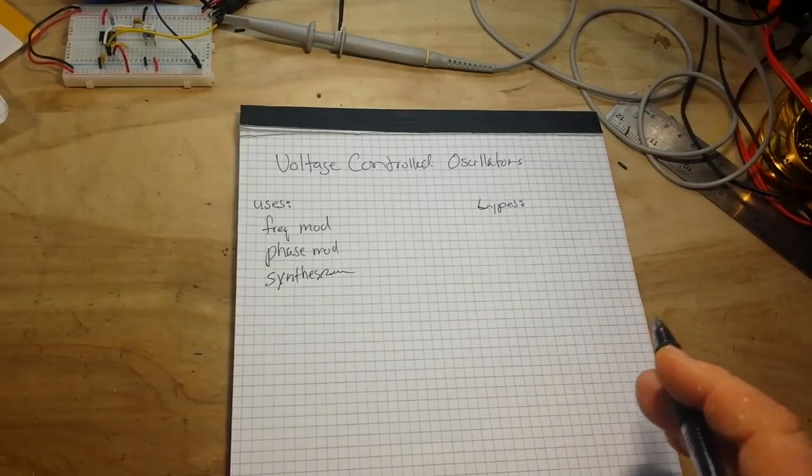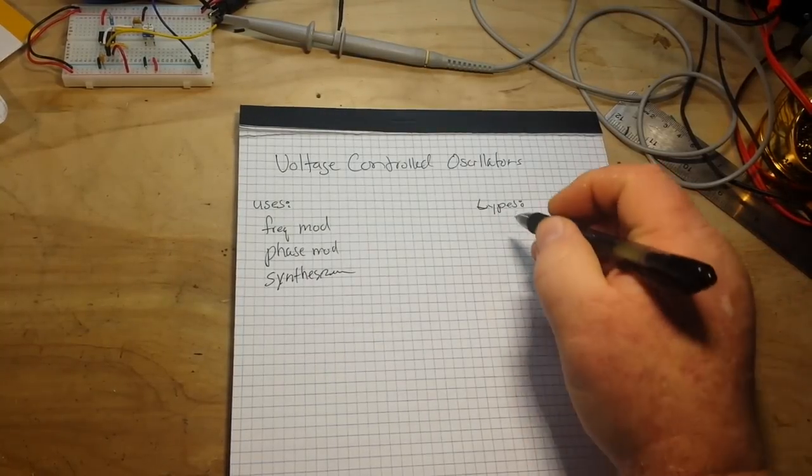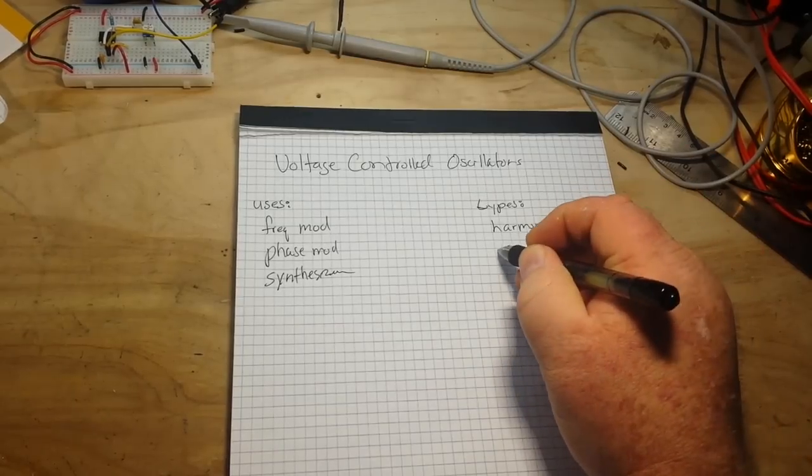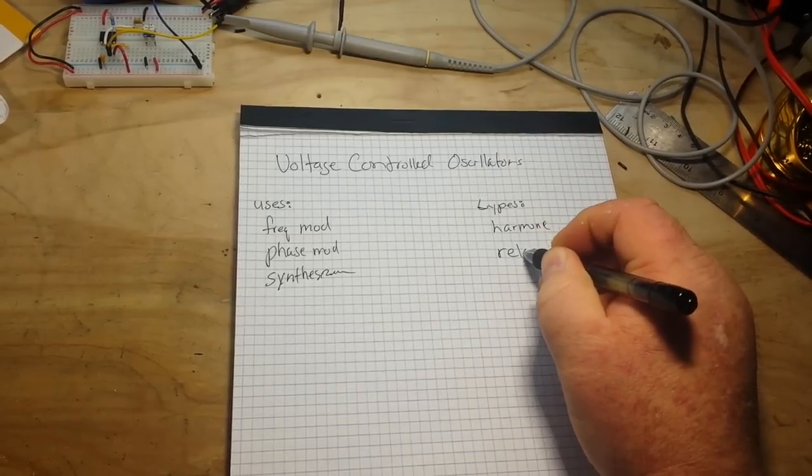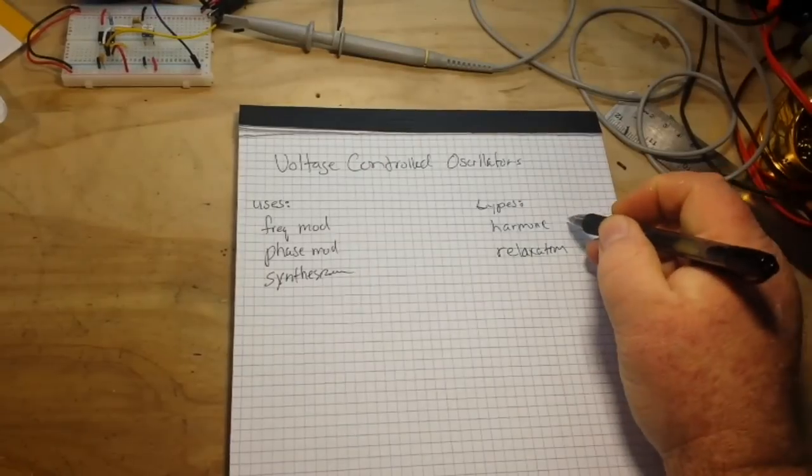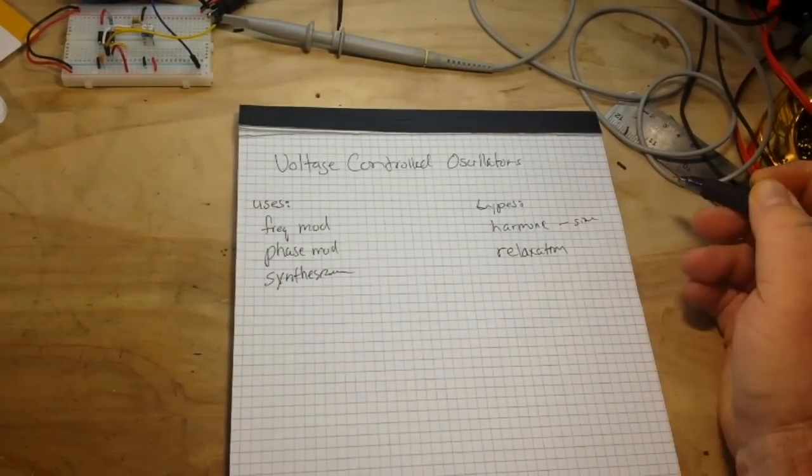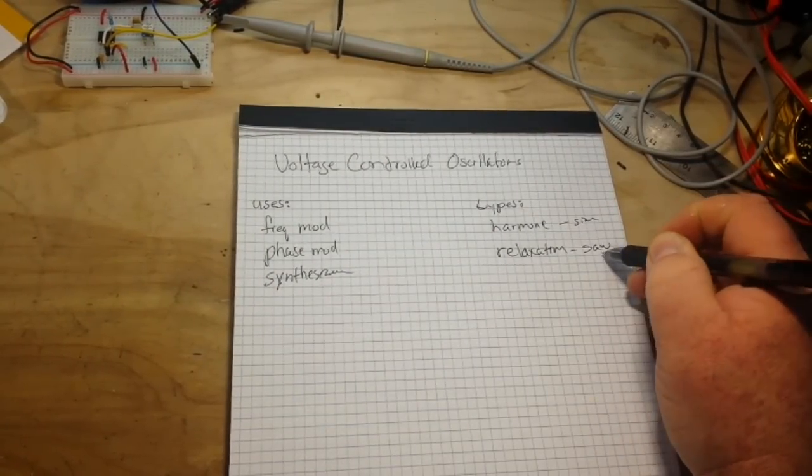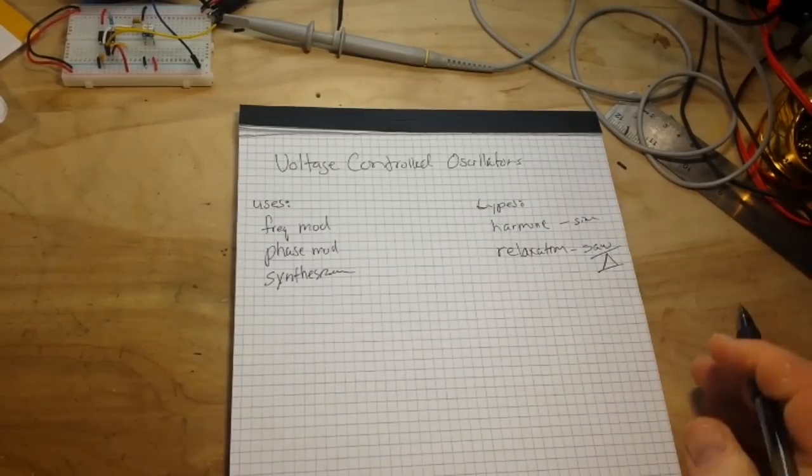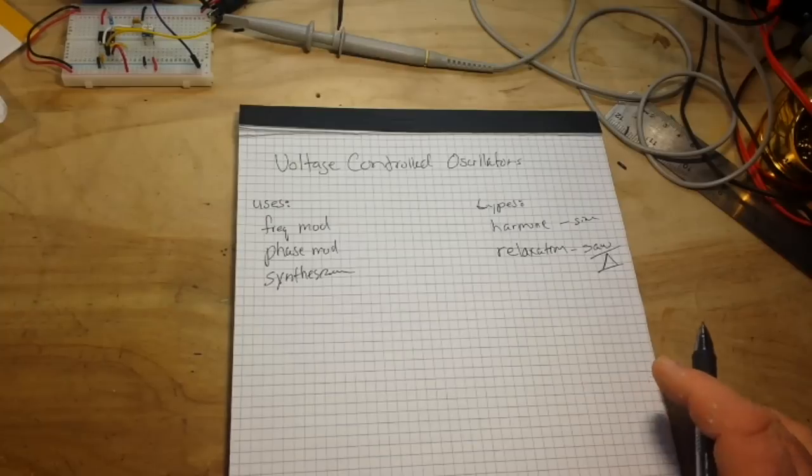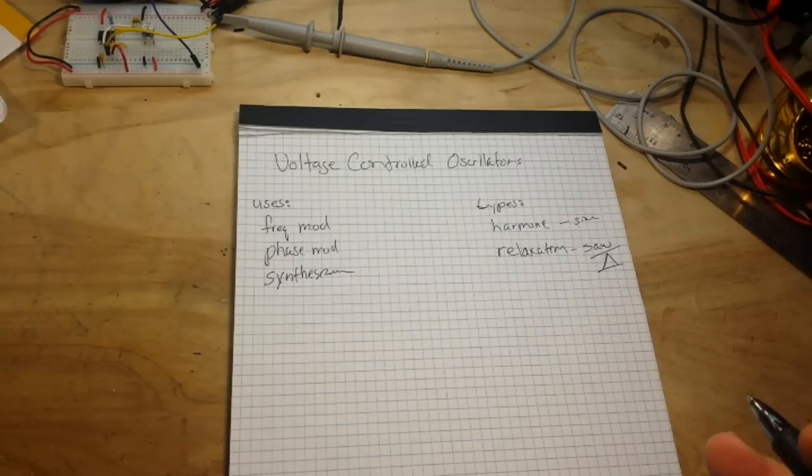And there are a couple of different types. We have harmonic and we also have relaxation oscillators. Harmonic oscillators are generally going to produce a sine type wave. And relaxation oscillators are going to produce a saw wave or even a triangle wave, depending. What we're going to create, though, is going to be more of a square wave oscillator.